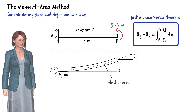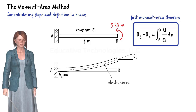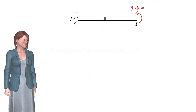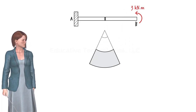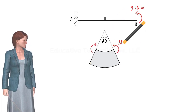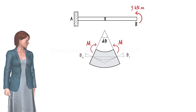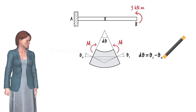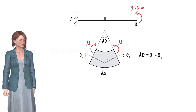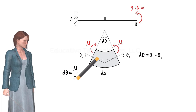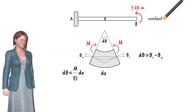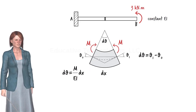Let us see why this relationship holds true. In lecture SA22, we showed that for an infinitesimal slice of a beam, the difference between the slopes of the elastic curve at the ends of the slice can be expressed in terms of the internal bending moment at that point. Here we are assuming that the beam has a constant EI.